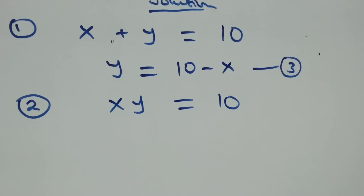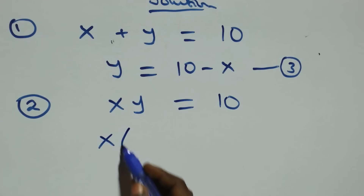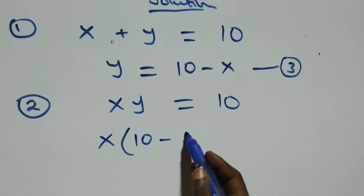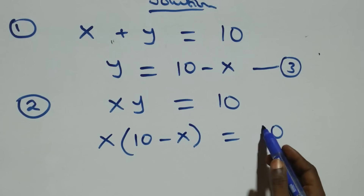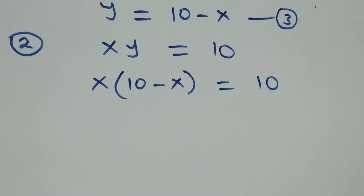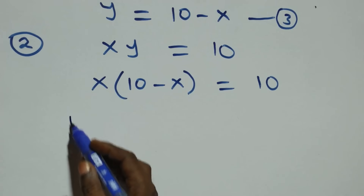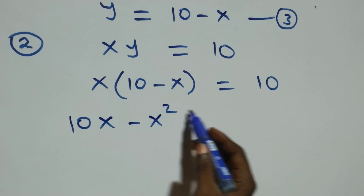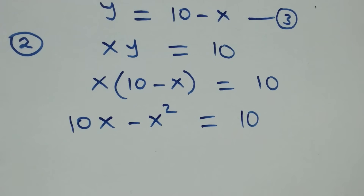From equation two, which is x times y equals ten, we substitute equation three here. This becomes x times (ten minus x) equals ten.